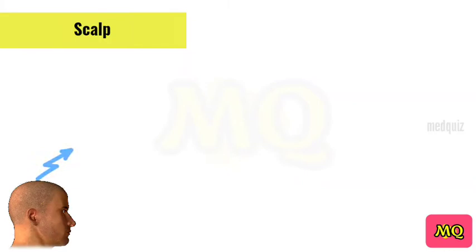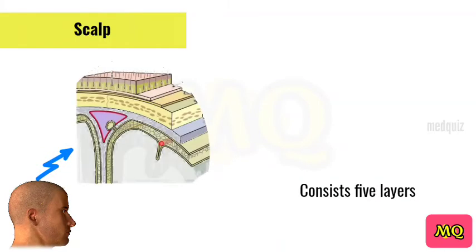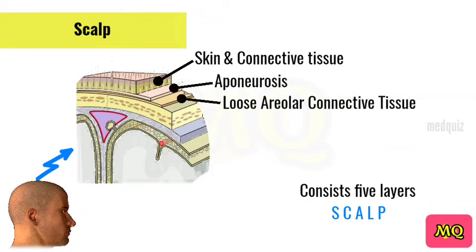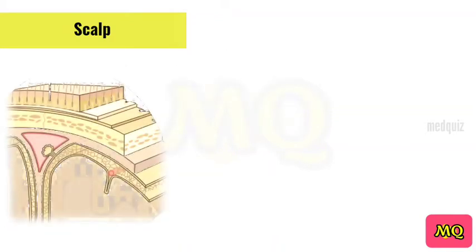The scalp consists of five layers. The first three layers are tightly bound together and move as a collective structure. The mnemonic SCALP is a useful way to remember the layers: S for skin, C for dense connective tissue, A for epicranial aponeurosis, L for loose areolar connective tissue, and P for periosteum.